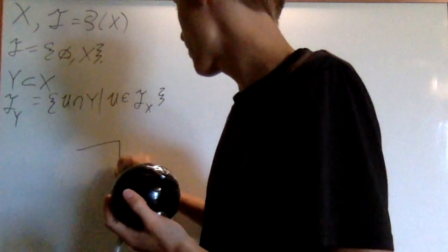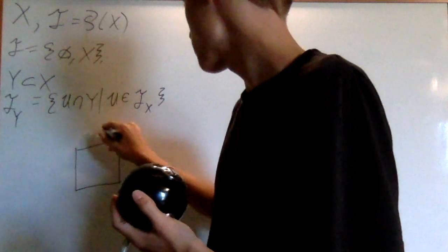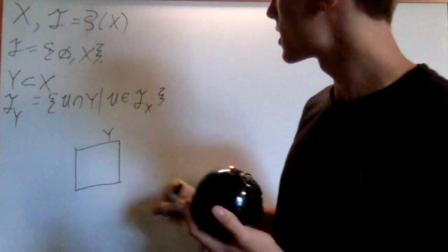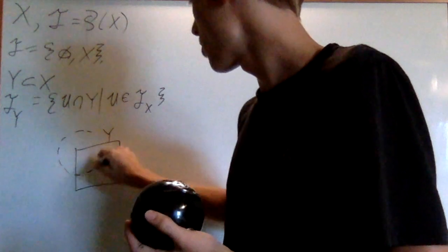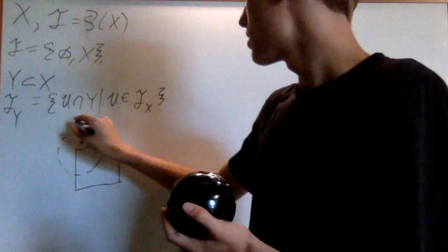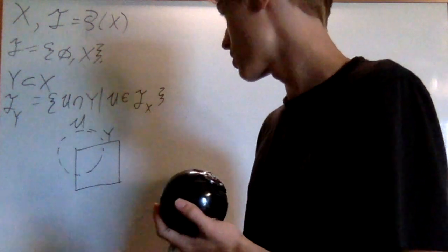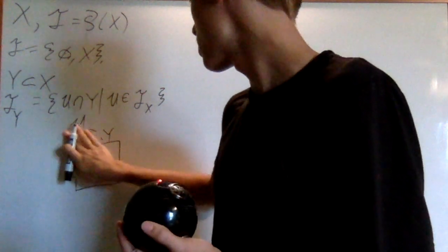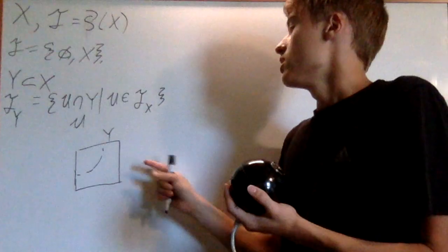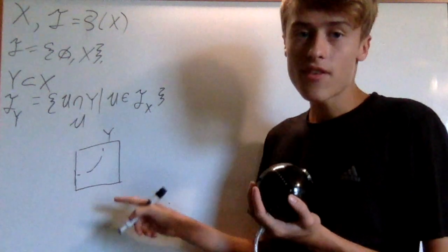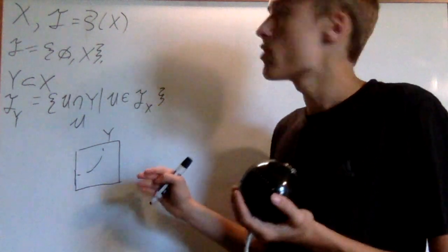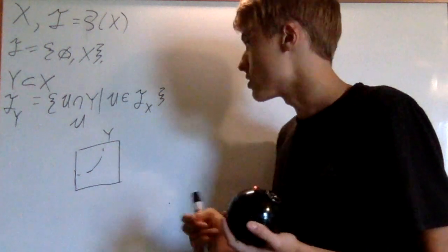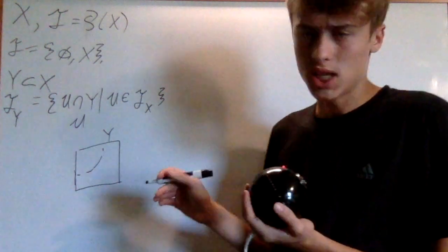If I have a space Y right here and the entire space is X, and an open set in Y, say this is an open set in X, and the open space in Y is just that part. You can see that the topology is different because if Y has boundaries, now the open sets have boundaries. It gives you a sort of weird topology.